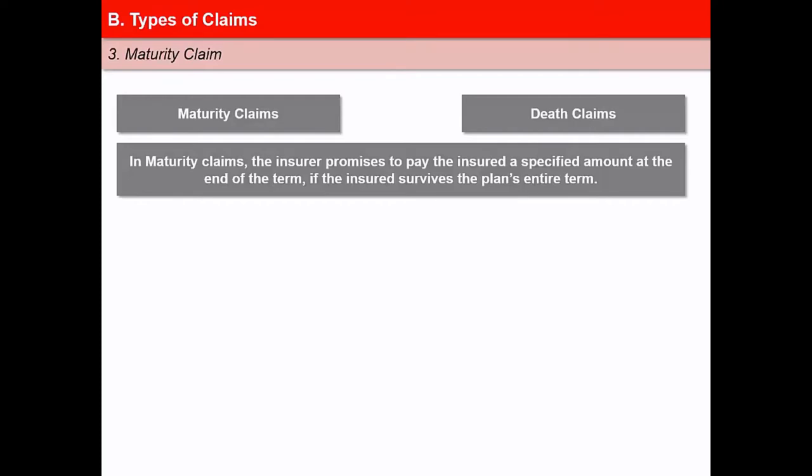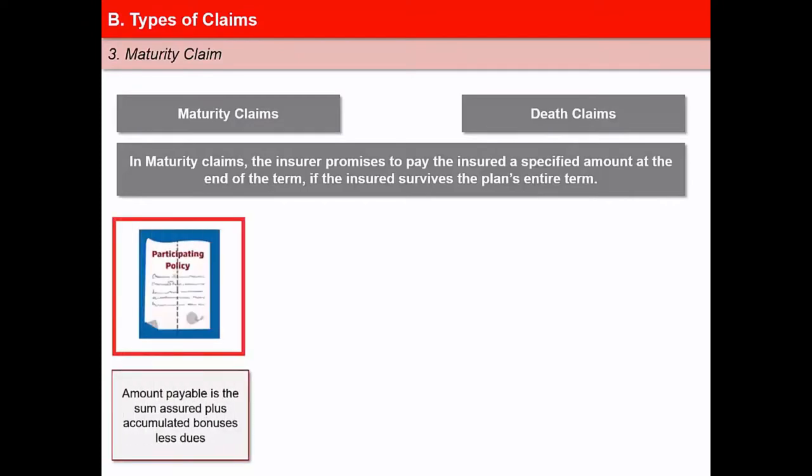The maturity value of the policy depends upon the type of policy taken by the policyholder. In case of a participating plan, the amount payable under maturity claim is the sum assured plus accumulated bonuses, less dues such as outstanding premium, policy loans and interests thereon.